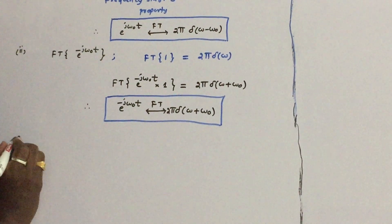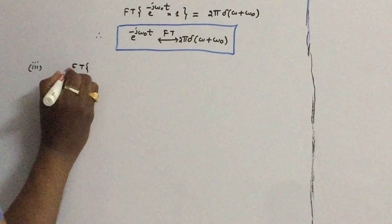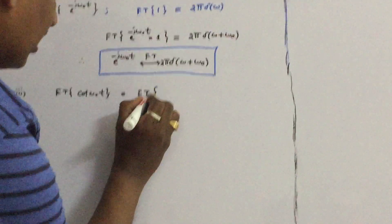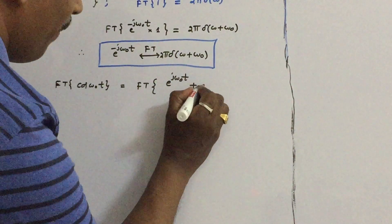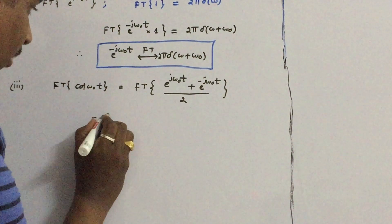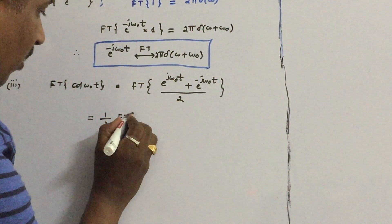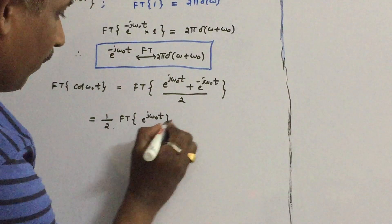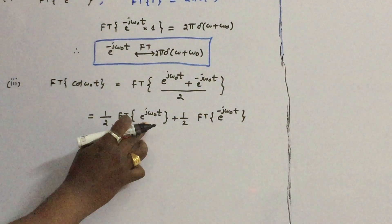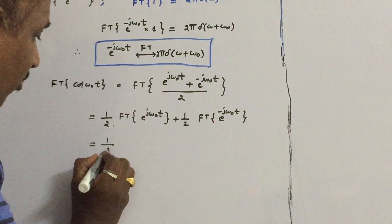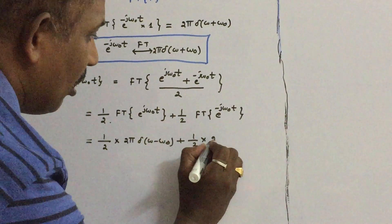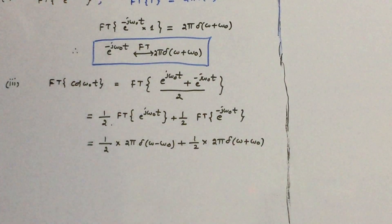Now let us find the Fourier transform of cos(ω₀t). For this purpose, cos(ω₀t) is written using Euler's formula as [e^(jω₀t) + e^(−jω₀t)] / 2. So we take 1/2 times the Fourier transform of e^(jω₀t) plus 1/2 times the Fourier transform of e^(−jω₀t). We have already derived both of these above. The Fourier transform gives: (1/2)·2π·δ(ω−ω₀) + (1/2)·2π·δ(ω+ω₀).